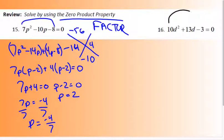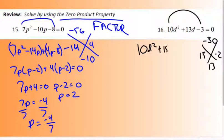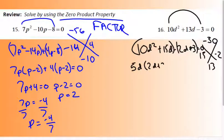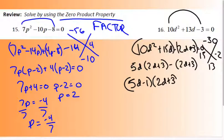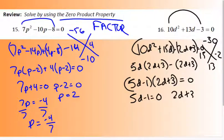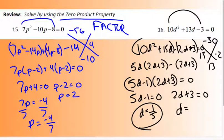Number 16 is the same idea. Multiply to get negative 30 with 13, giving factors 15 and negative 2. Rewrite as 10d² + 15d − 2d − 3 = 0. Factor by grouping: 5d(2d + 3) minus 1(2d + 3) = 0, giving (5d − 1)(2d + 3) = 0. So d equals 1/5 or d equals negative 3/2.